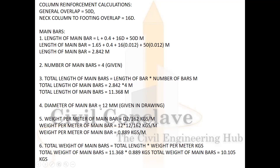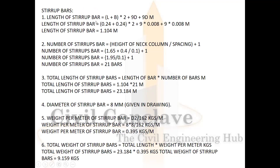Total length of main bars = 2.842 × 4 = 11.368 meters. Diameter is 12mm, weight per meter = 0.889 kg/m. Total weight of main bars = 11.368 × 0.889 = 10.105 kg. Stirrup length = (width + depth) × 2 + 9d + 9d (two hooks). Length of stirrup = (0.24 + 0.24) × 2 + 9 × 0.008 + 9 × 0.008 = 1.104 meters. Number of stirrups for total height 2.05 meters ≈ 21 bars.